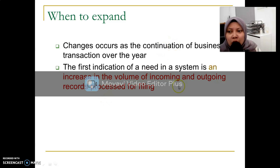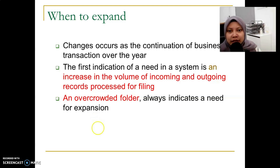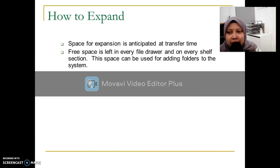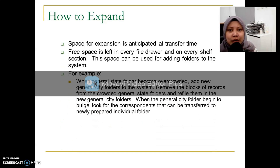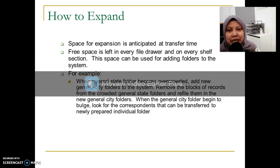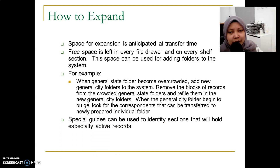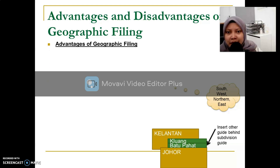The increase in volume of incoming and outgoing records will indicate that you need to expand your filing system. Overcrowded folders — where folders become too thick — signal the need for expansion. For example, if previously the company had no branch in a certain district, when a branch opens, a file will be created. You need to know which state that district belongs to, so you know under which guide to place it. For instance, if you expand your business in Johor, in the district of Pontian, that file will be created and placed under Johor, arranged in alphabetical order by district.